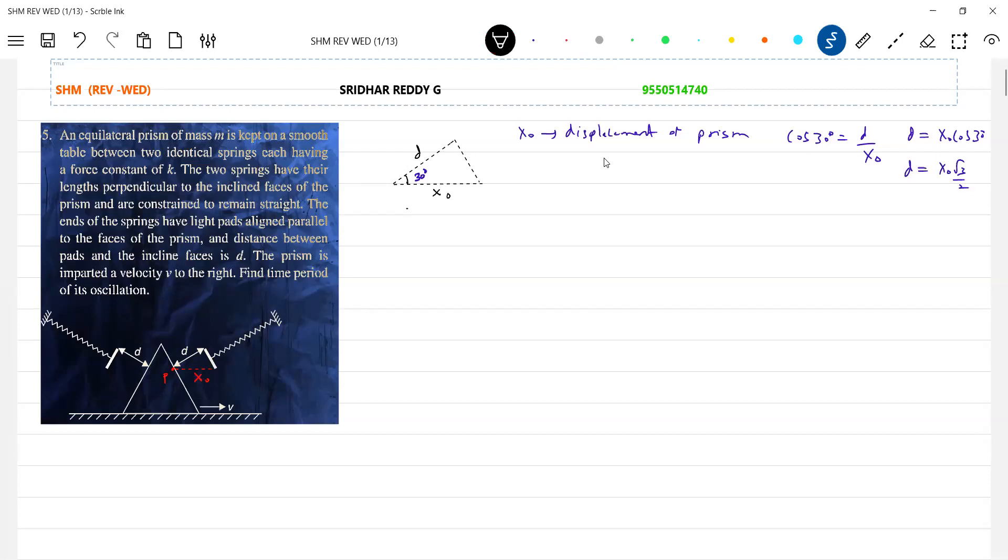Then what is the time needed to cover a distance X naught with the speed V? So let me call that as time T1. So T1 will be D by V. So what is this time taken by prism? Time taken by the prism to strike the spring. That's the first part.